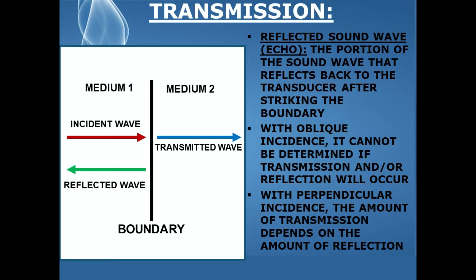With oblique incidence — when a sound wave approaches a boundary at an angle other than 90 degrees — it cannot be determined if transmission and/or reflection will occur. With perpendicular incidence, when a sound wave approaches and strikes a boundary at exactly a 90-degree angle, the amount of transmission depends on the amount of reflection.